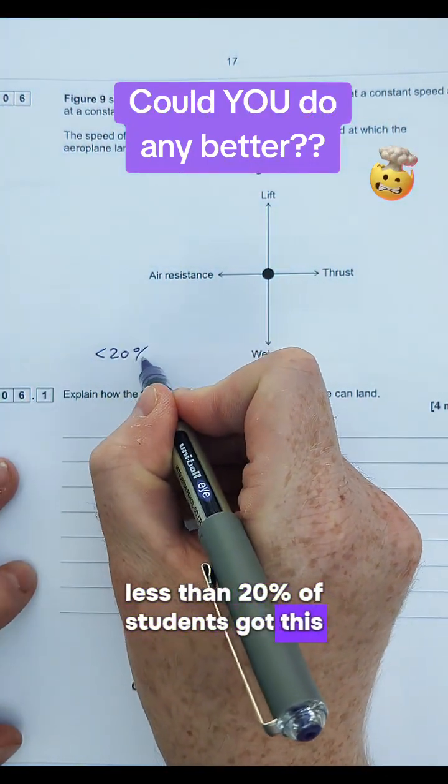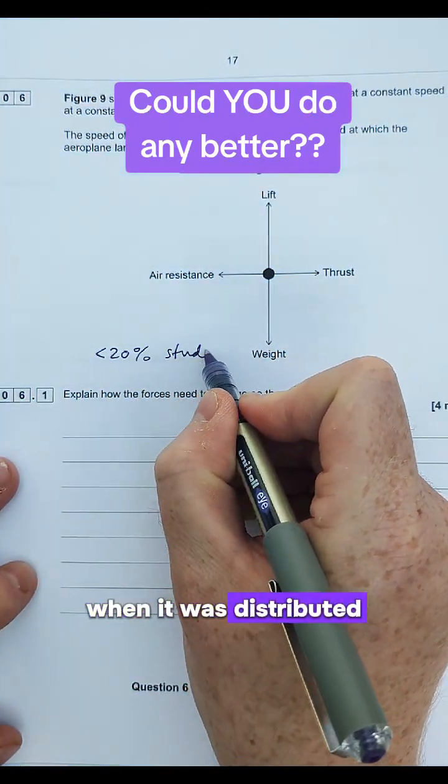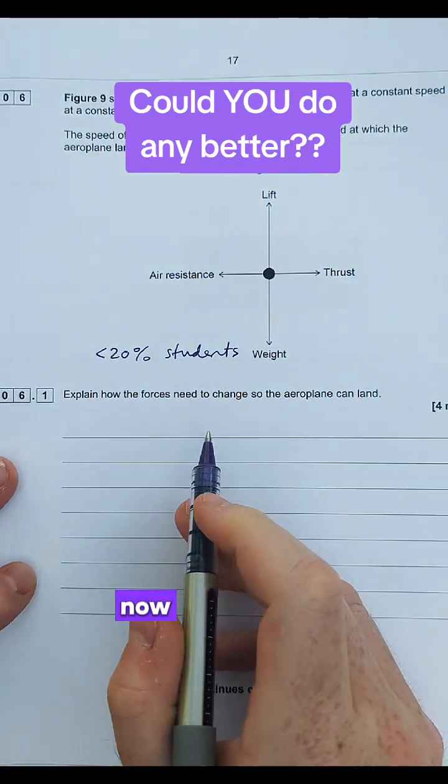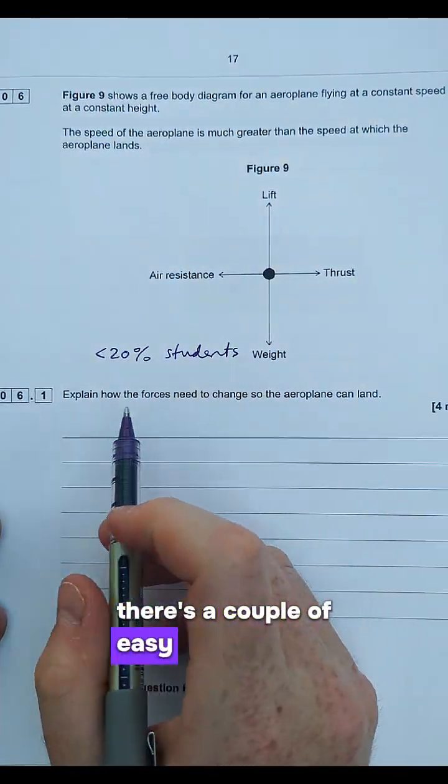Less than 20% of students got this question right when it was distributed in 2019. Now four marks is tricky to get. There's a couple of easy marks to get first of all.